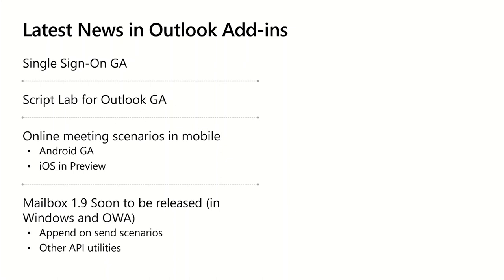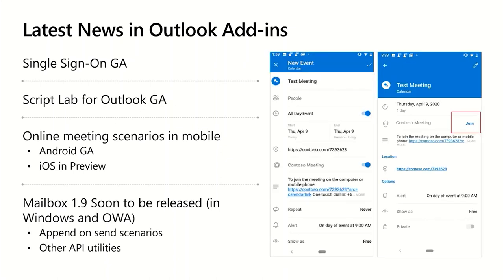ScriptLab for Outlook is now available as well. If you've been using this add-in in Word or Excel, it is now supported in Outlook — it's a very fun way to learn the JavaScript APIs. Also, one of the most popular Outlook Add-ins in the store are online meeting providers like Zoom and BlueJeans. We recently released updates so that users can create and join online meetings in seamless native integrations on mobile devices — it's GA for Android and in preview for iOS.